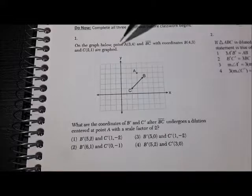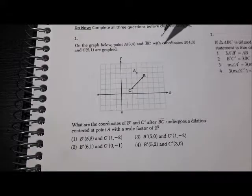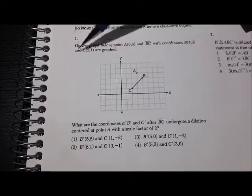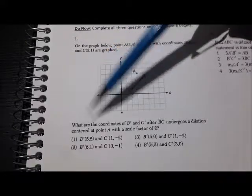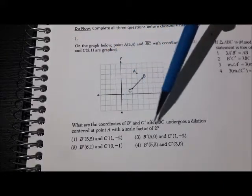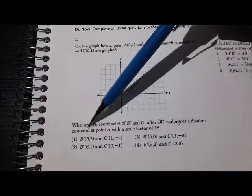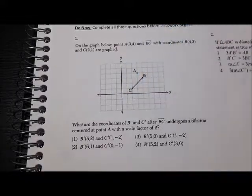So the problem says, on the graph below point A(3,4) and BC with coordinates B(4,3) and C(2,1) are graphed. What are the coordinates of B' and C' after line segment BC undergoes a dilation centered at point A with a scale factor of 2?